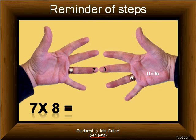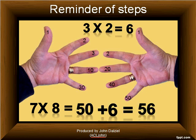So let's remind ourselves of the steps again. One, touch the two fingers together. Next, the fingers touching and those below are tens. And then we multiply the number of fingers above those that are touching on the left and multiply it by the number of fingers above those touching on the right. And finally add those two answers together. So here we've got 7 times 8 equals 50, and 3 times 2 is 6. 50 plus 6 is 56.